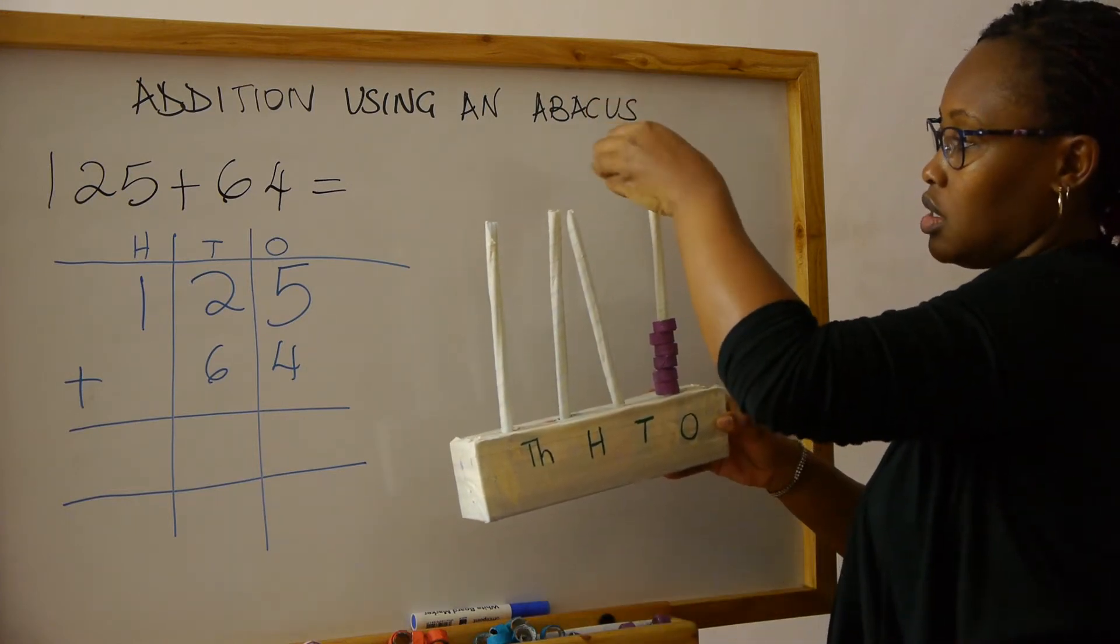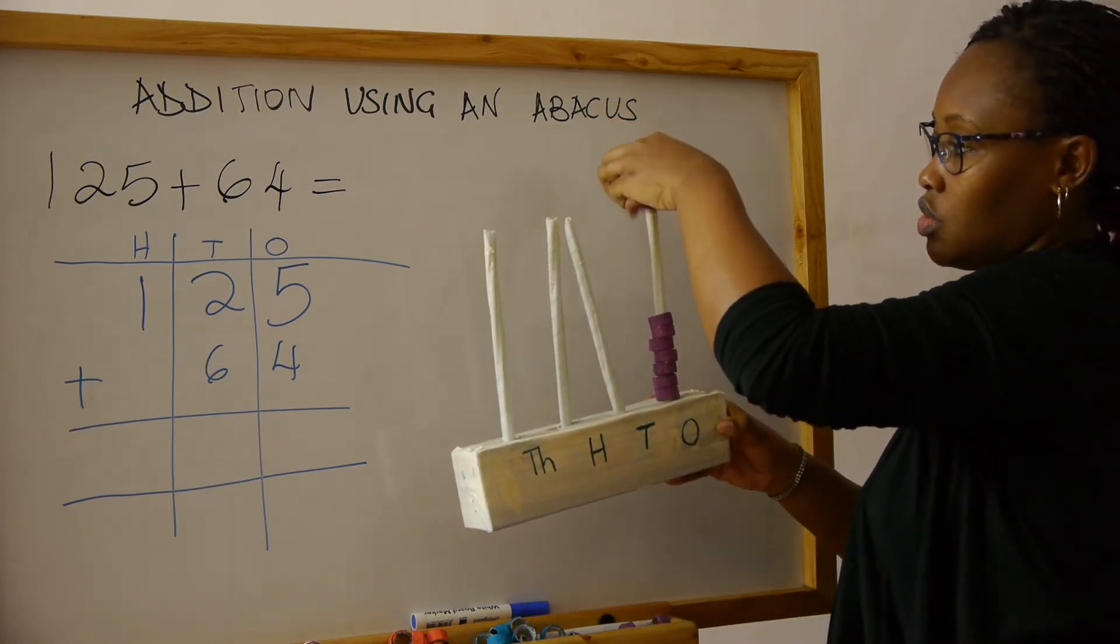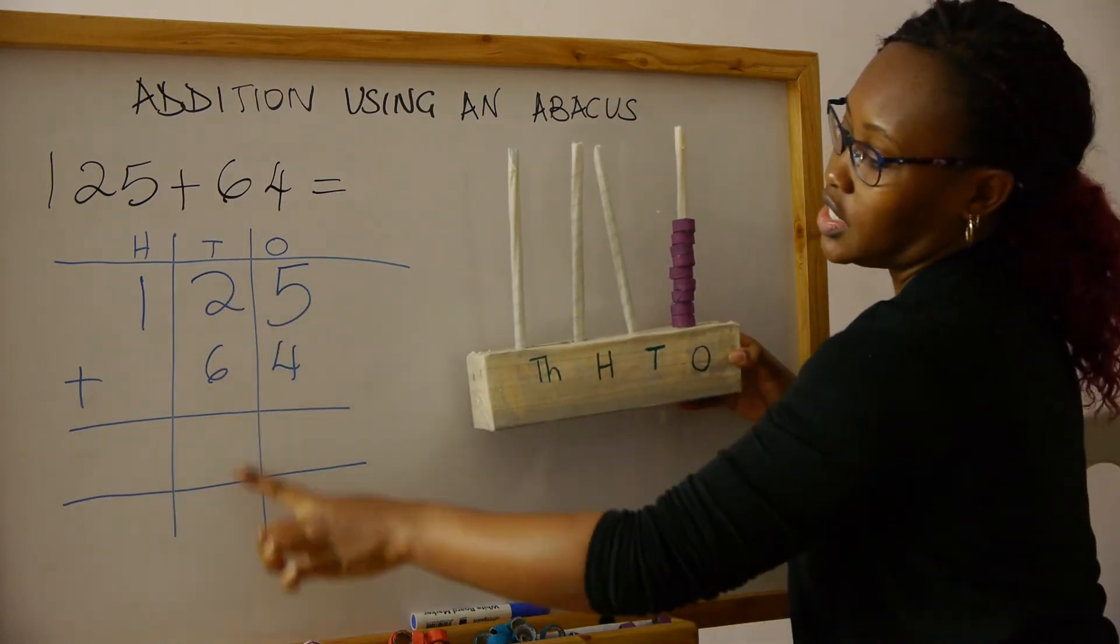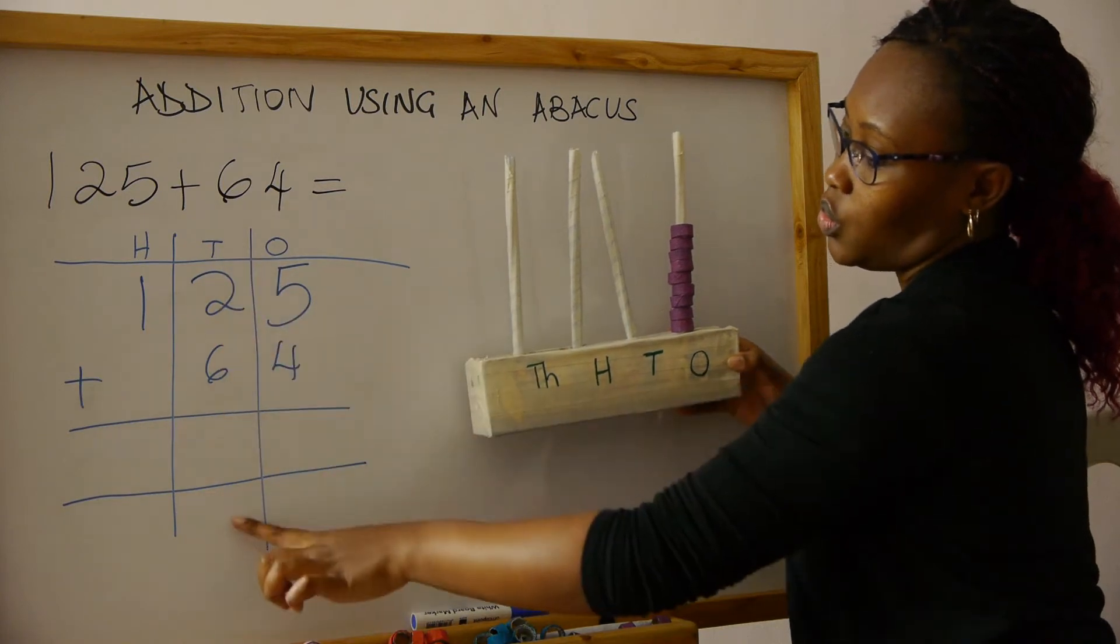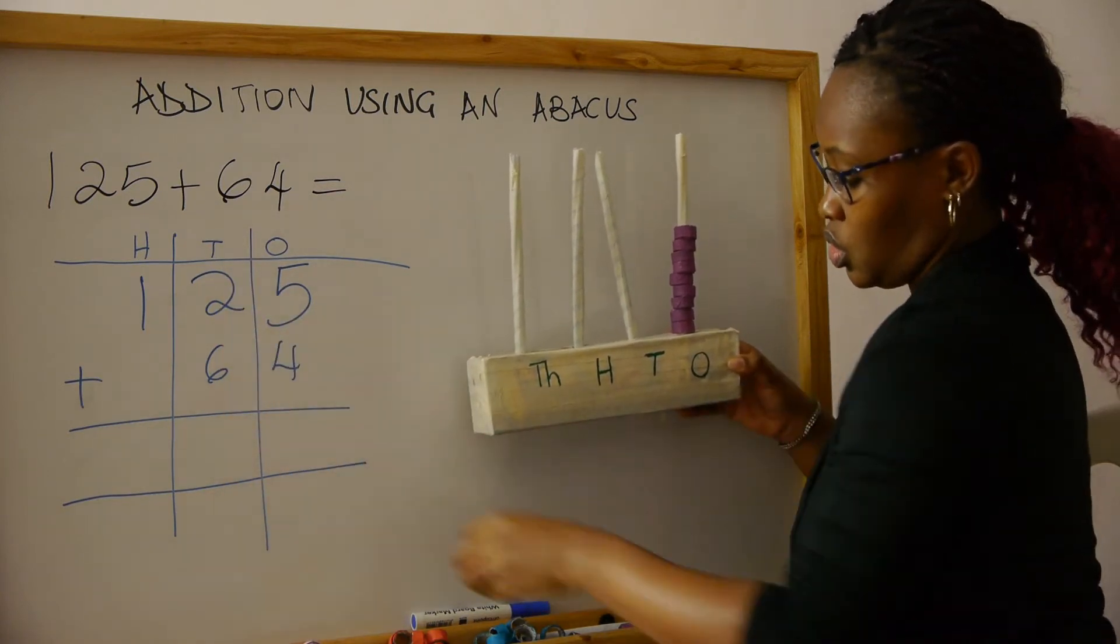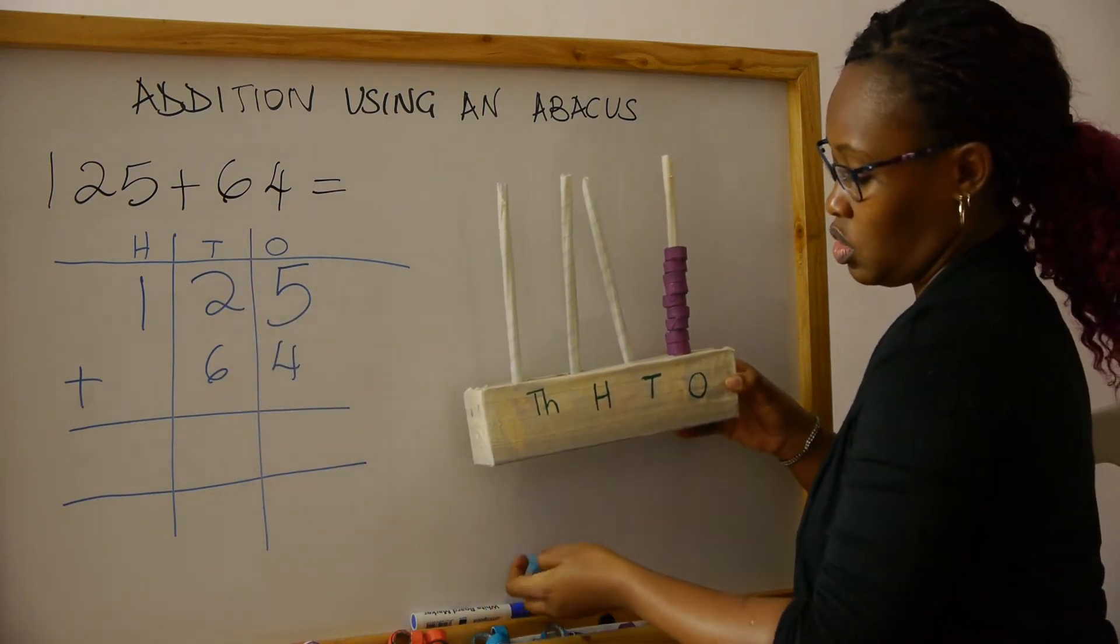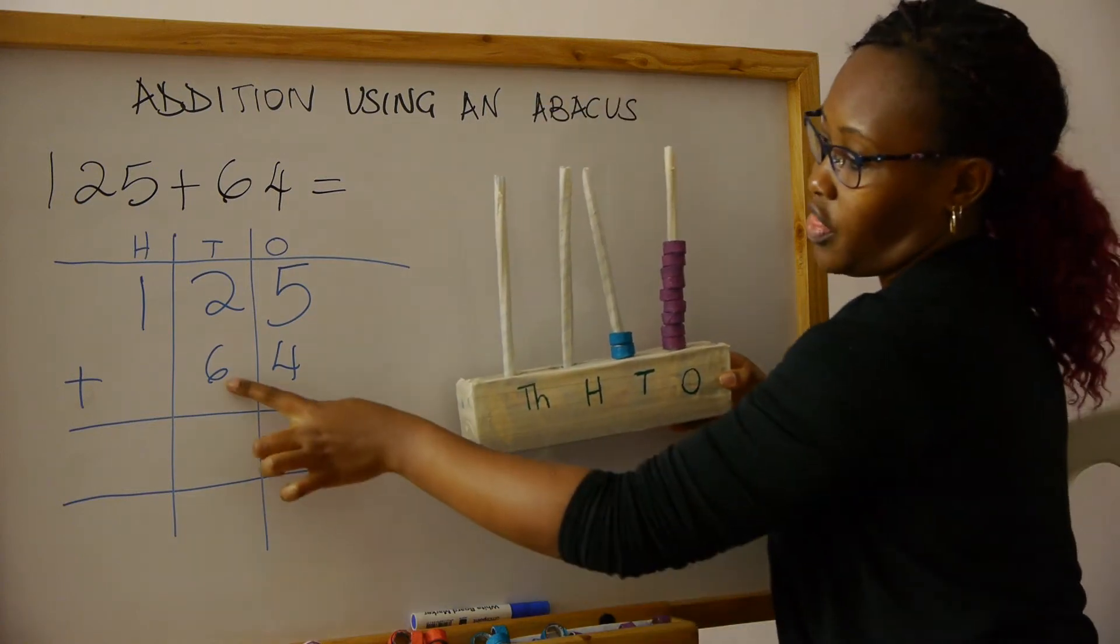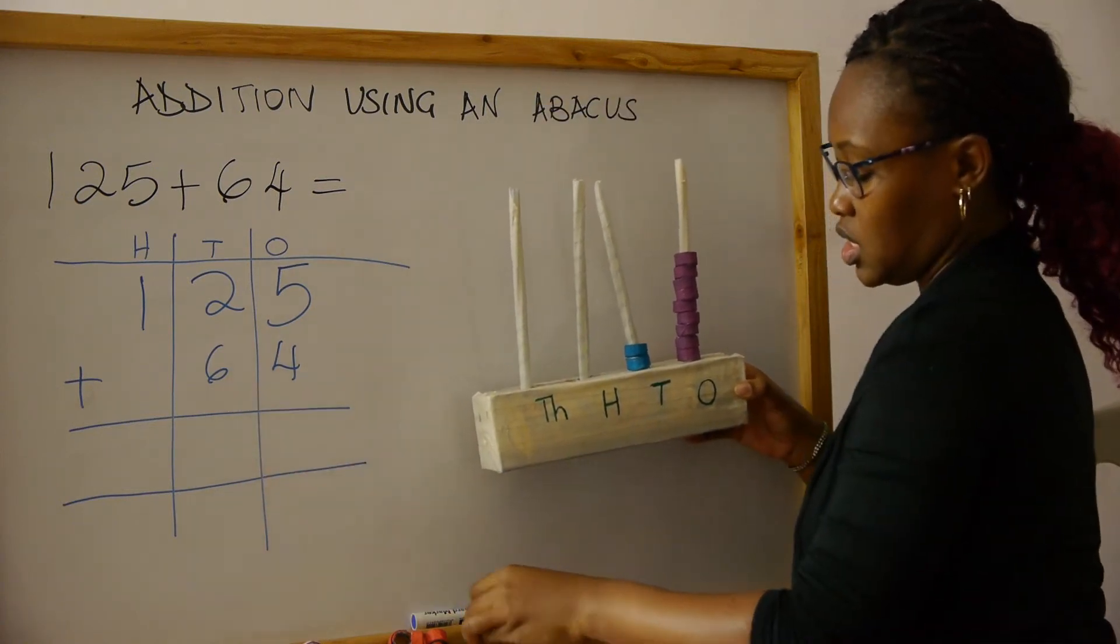That's one, two, three, four. Then we go to the tens column. We start with two, we put two, and then we put six.